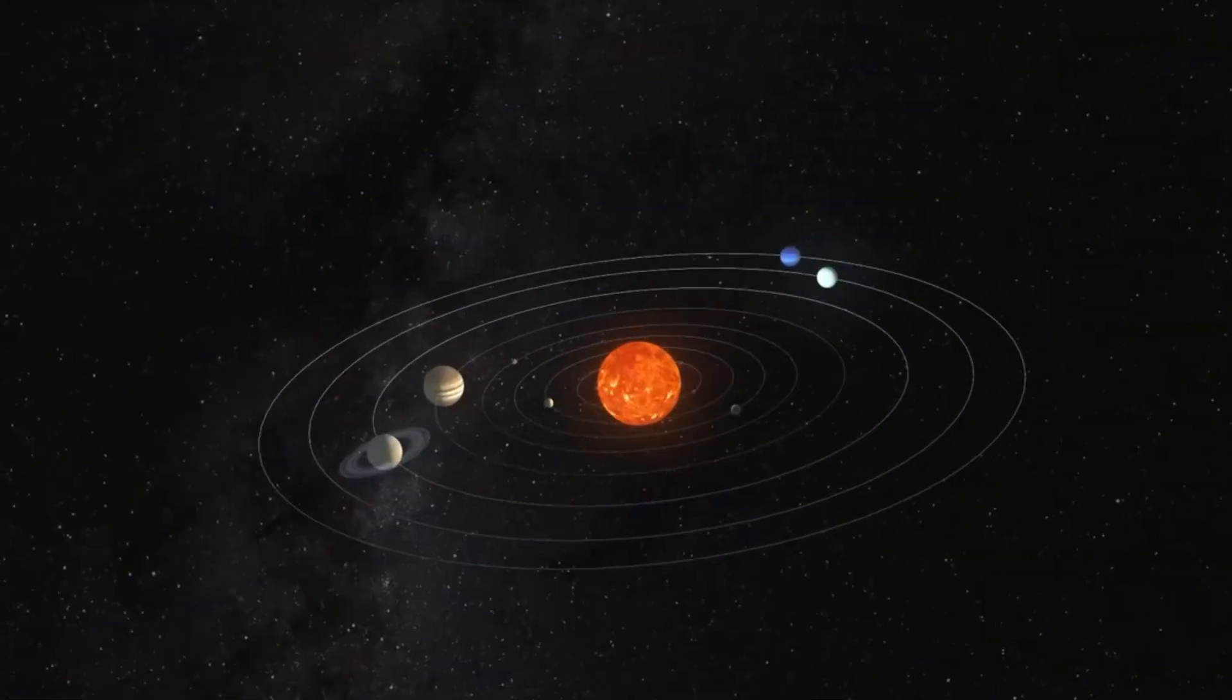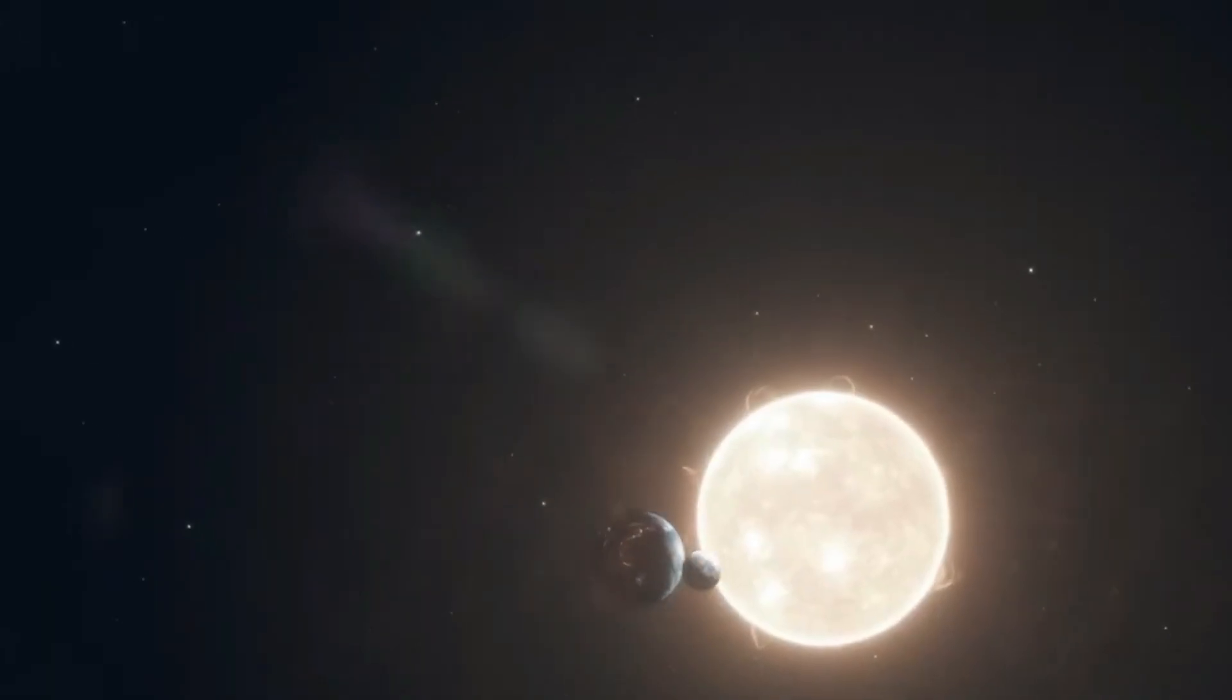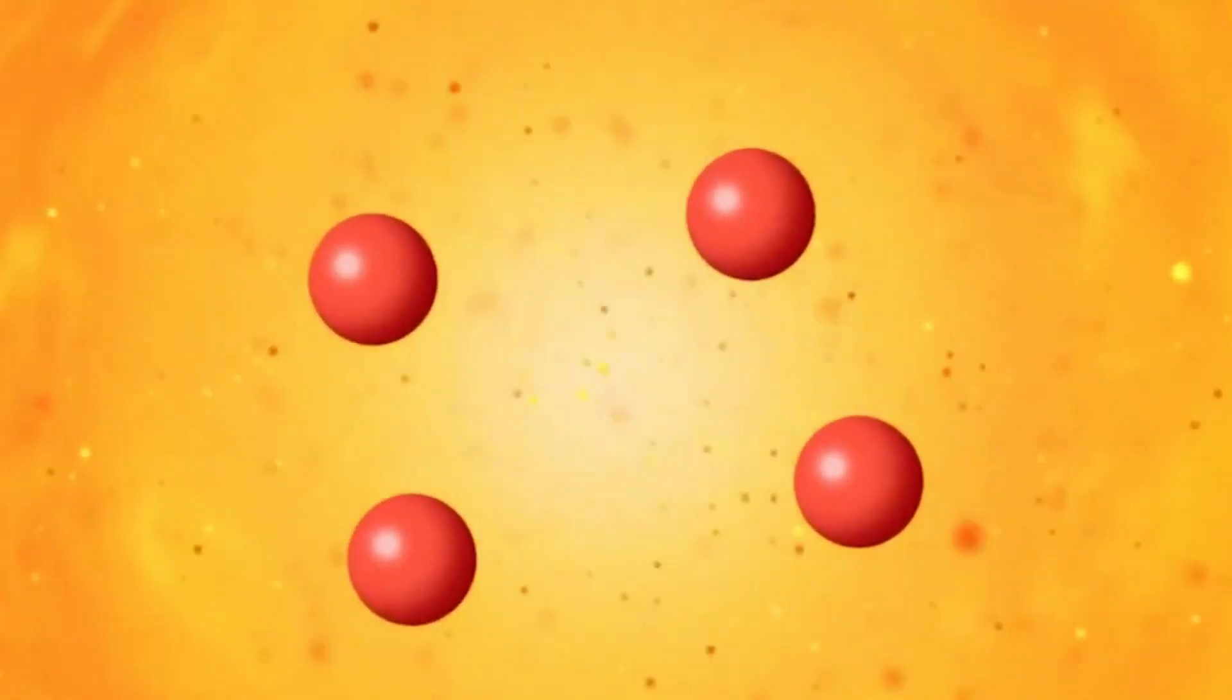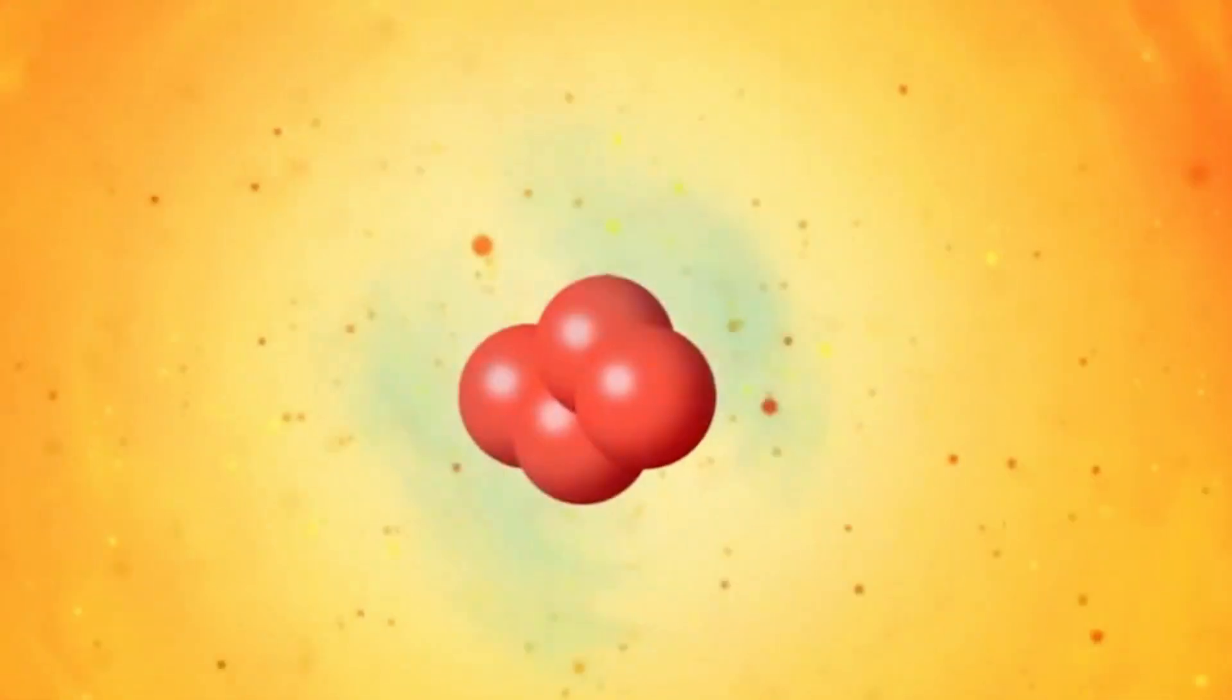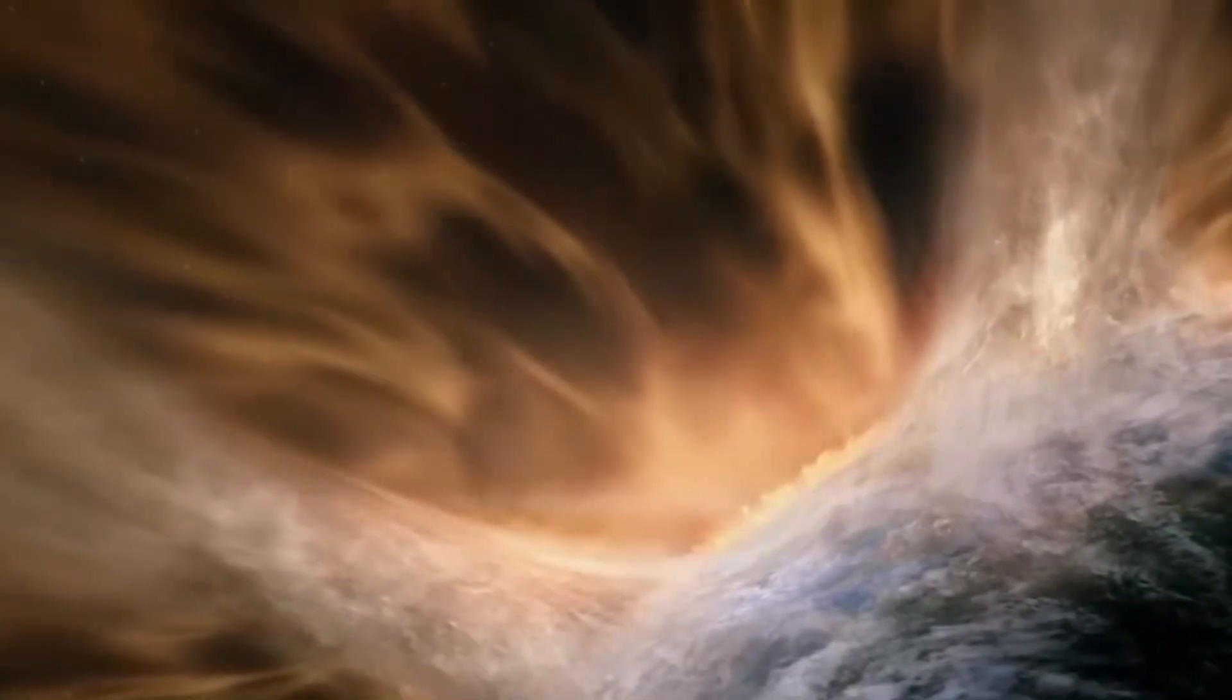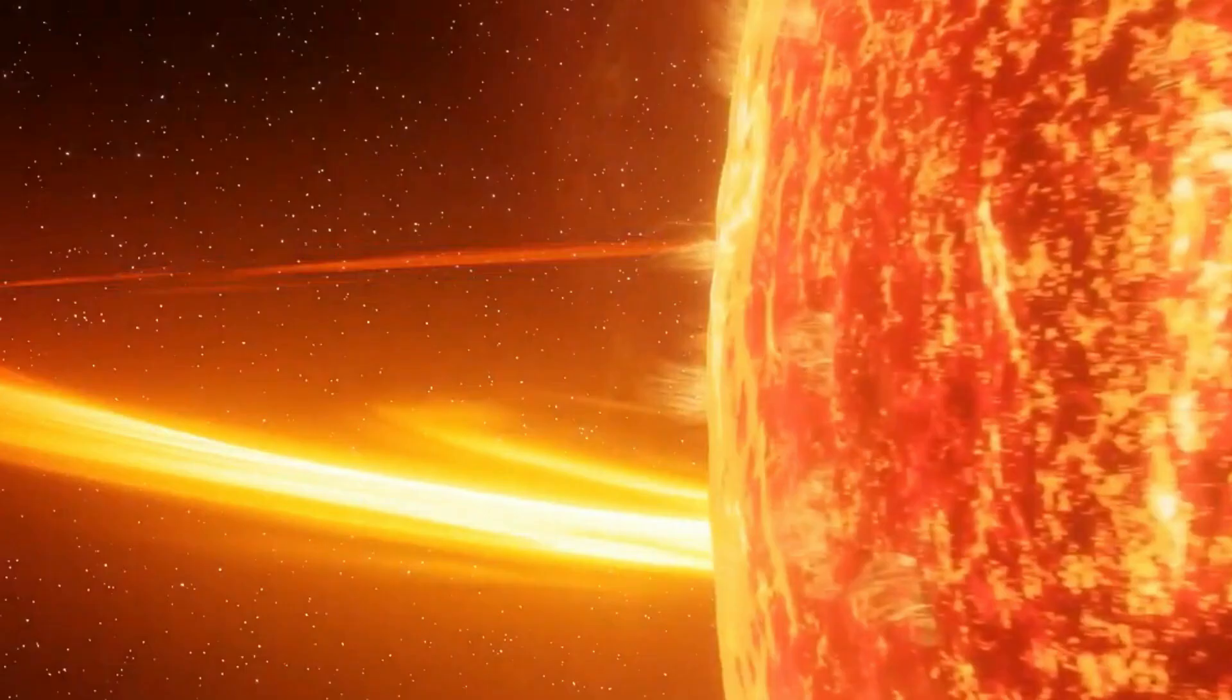Consider for a moment the humble rubber band. When twisted beyond its limit, it yearns to return to its original state, and in doing so releases energy. The sun's magnetic fields behave similarly, but on a scale that dwarfs our earthly analogies. When these fields realign, the energy released is unimaginable, manifesting as solar flares.